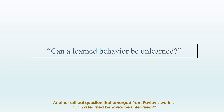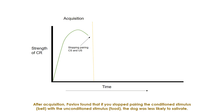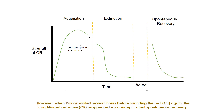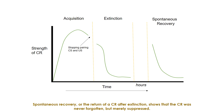Another critical question from Pavlov's work: can a learned behavior be unlearned? After acquisition, Pavlov found that if you stopped pairing the conditioned stimulus with the unconditioned stimulus, the dog was less likely to salivate. The weakening of a conditioned response is called extinction — meaning the sound of a bell alone no longer causes the dog to salivate. However, when Pavlov waited several hours before sounding the bell again, the conditioned response reappeared, a concept called spontaneous recovery. Spontaneous recovery, or the return of the conditioned response after extinction, shows that the conditioned response was never forgotten, but merely suppressed.